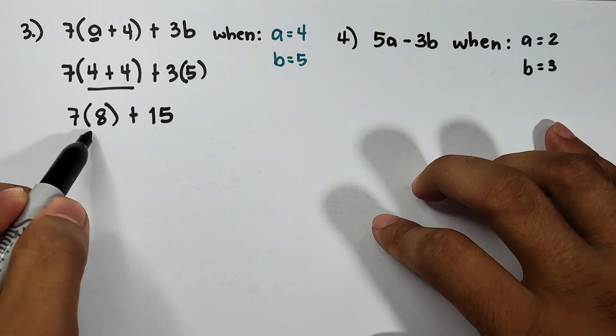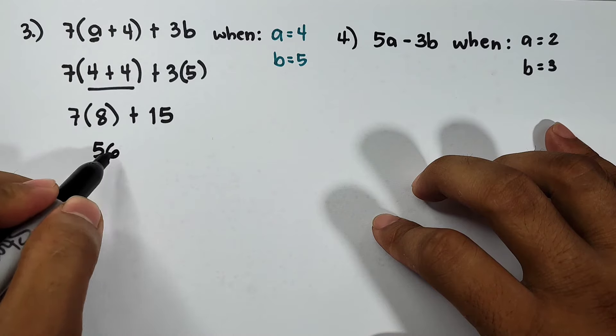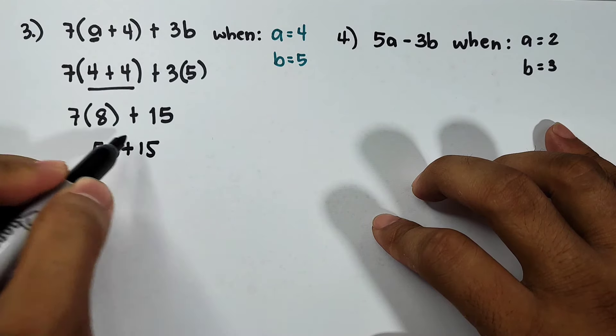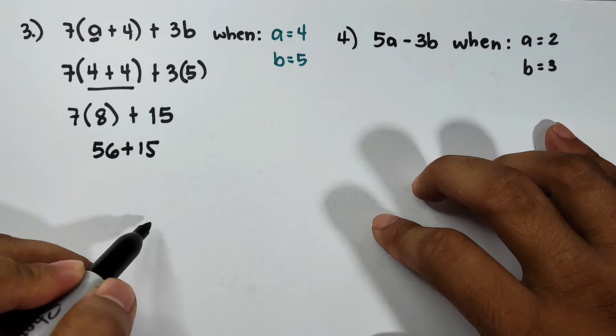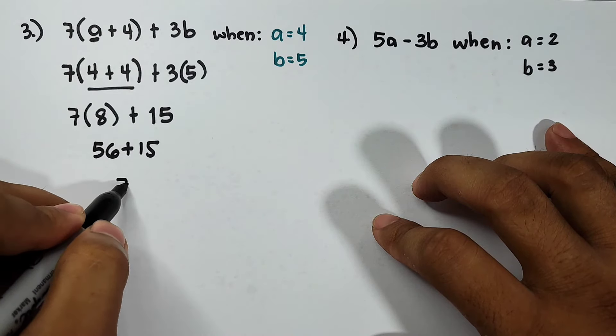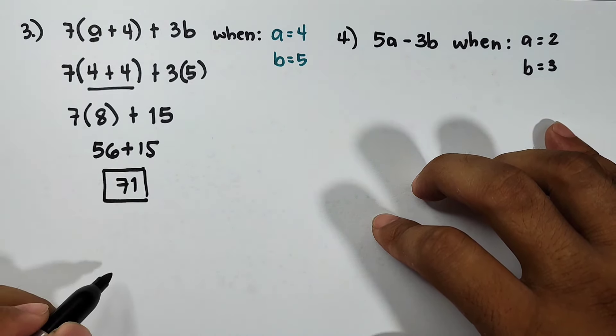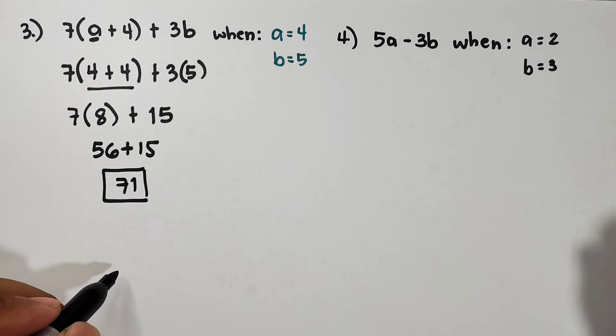Now 7 times 8 is 56, then copy plus 15. So 56 plus 15, that would be 71. And this is now the answer for item number 3.